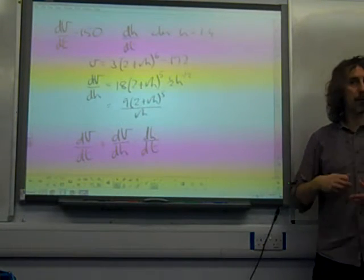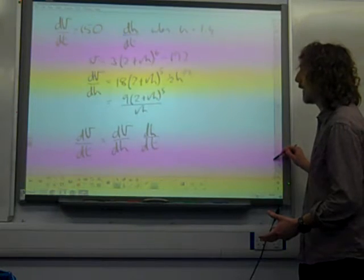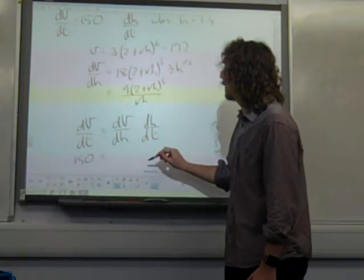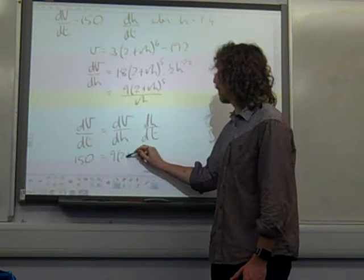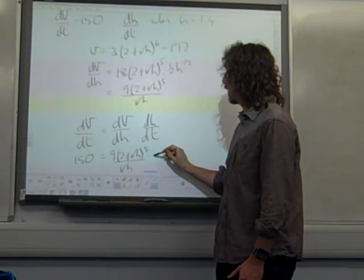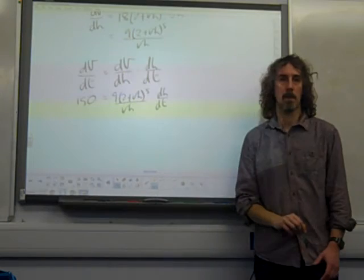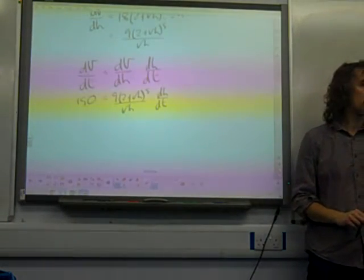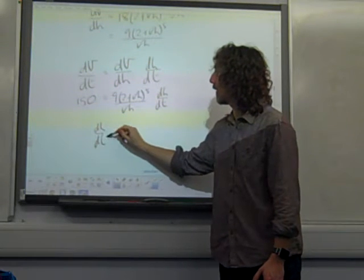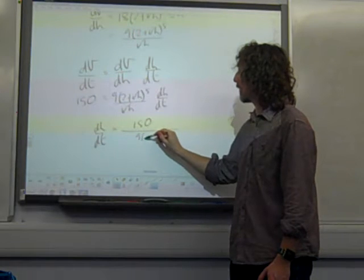So let's try and fill in some of the gaps, some of the things that we know in that equation. dV by dT is 150. dV by dH is 9 times (2 plus root H) to the 5 over root H times dH by dT. So if we try and rearrange this, we want to find dH by dT. dH by dT is 150 divided by this expression.